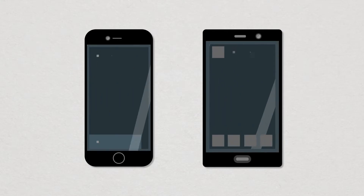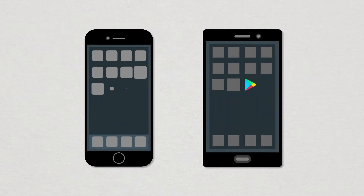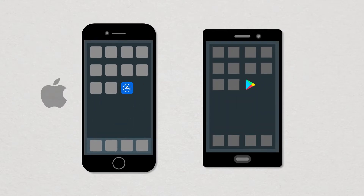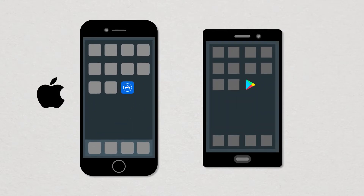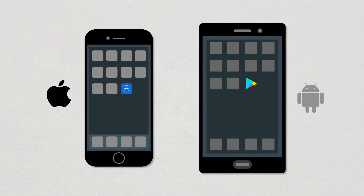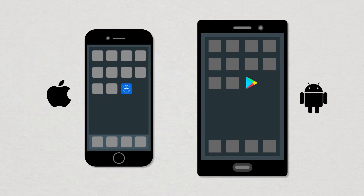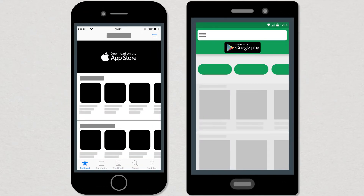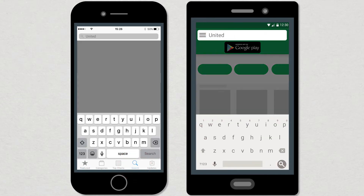To download and install our mobile banking app, start by opening either the App Store for Apple iOS devices or Google Play for Android devices. Once in the App Store or Google Play, look for the Search feature and enter our name to search for the app.